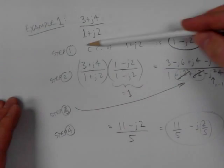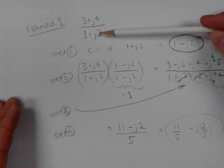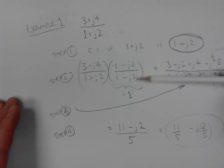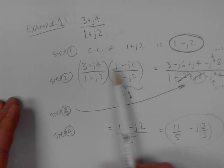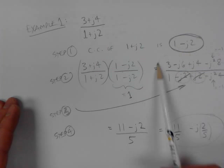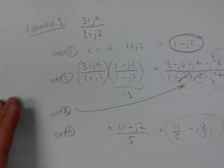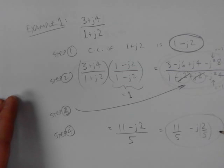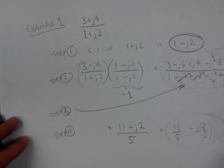So we had this complex division, found the complex conjugate of the denominator, multiplied top and bottom by that — which is the same as multiplying by one. That gives the same value but in a different form, and the bottom ends up without any j terms, which allows us to divide it properly. That's example one.